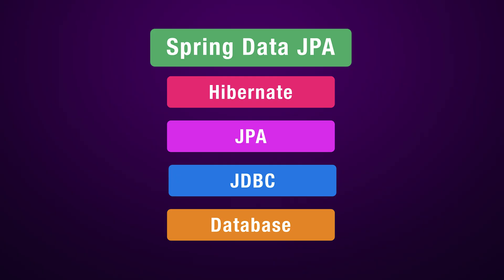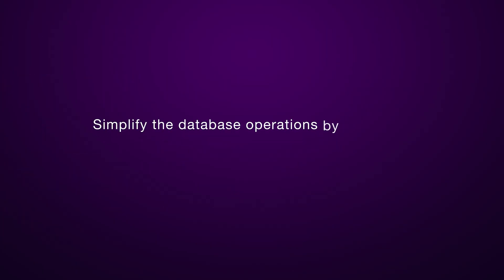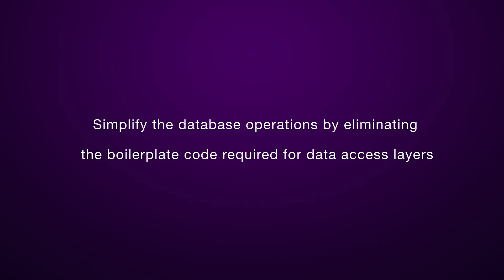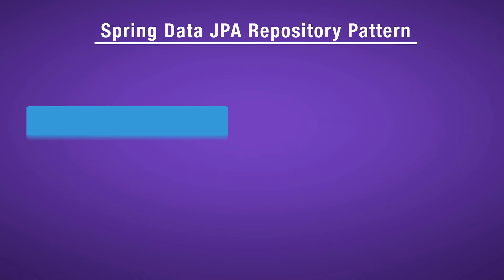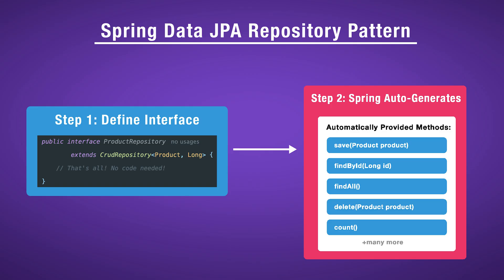Spring Data JPA is a project built on top of JPA and Hibernate that further simplifies data access in Spring applications. Its main goal is to eliminate the boilerplate code required for data access layers. Spring Data JPA provides a repository pattern where you define an interface for each of your domain models. For example, to manage a product entity, you create a ProductRepository interface that extends CrudRepository. By doing this, Spring Data JPA automatically provides all the implementation for common operations like save, findById, findAll, and delete — without you having to write a single line of implementation code. This allows you to focus on your application's business logic and let Spring Data JPA handle the database interactions.